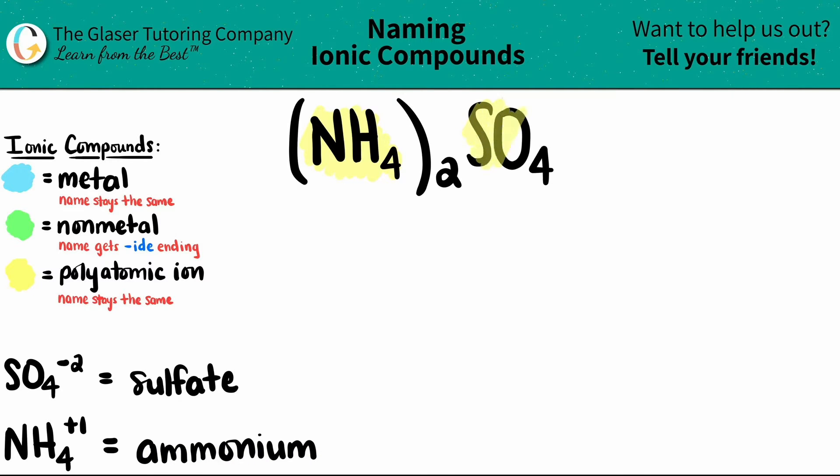The other polyatomic is SO4, which always has a -2 charge and is called sulfate.